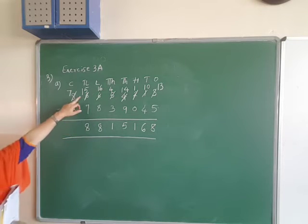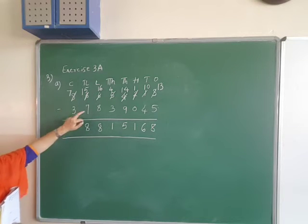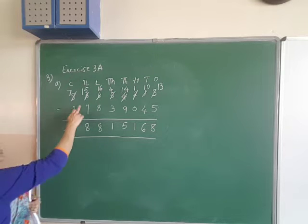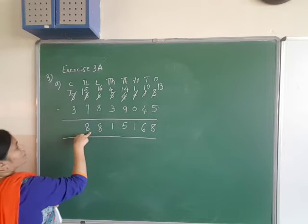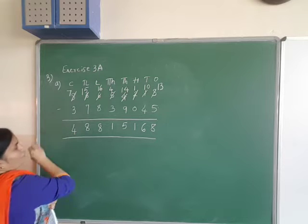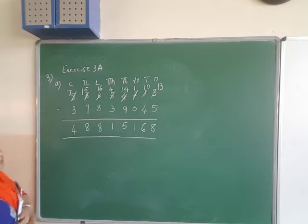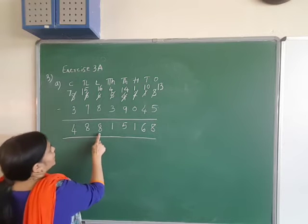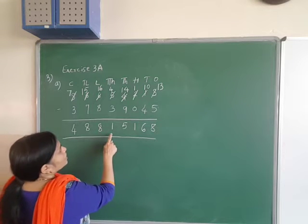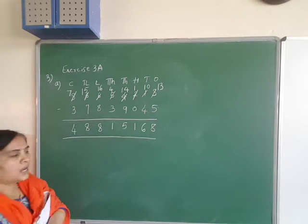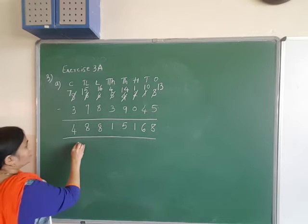When you add these two, you should get 15 — 7 plus 7 is 14, plus 1 is 15. So 15 minus 7 is 8. Then 7 minus 3 is 4. So the answer you got is 4 crores 88,15,168.